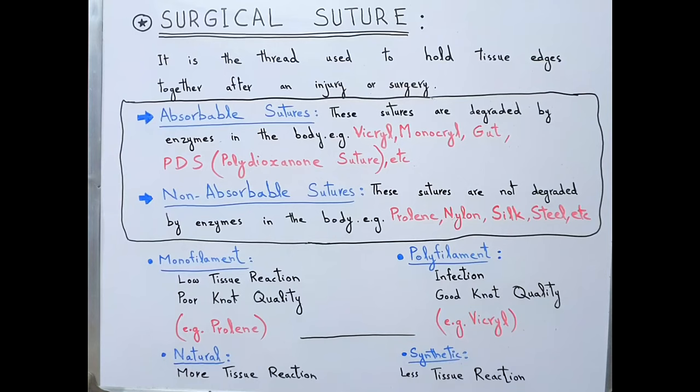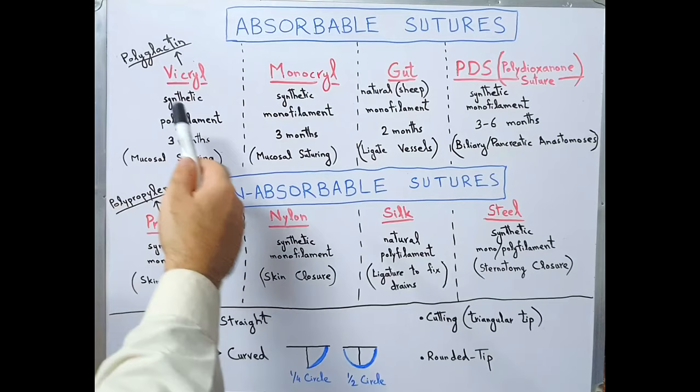According to one more classification, sutures can be natural or synthetic. Natural sutures are prone to cause more tissue reaction because they are of natural origin, while synthetic sutures are less likely to cause a tissue reaction. In the next section, we will see the absorbable and non-absorbable sutures in a bit more detail.